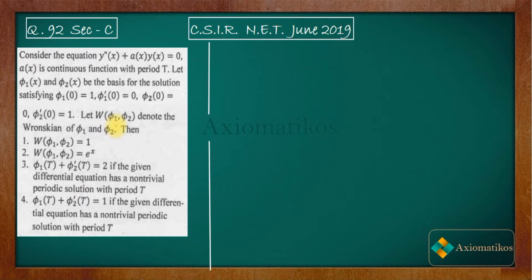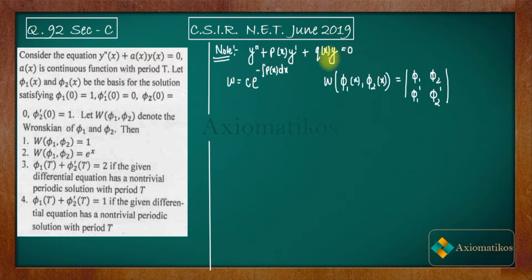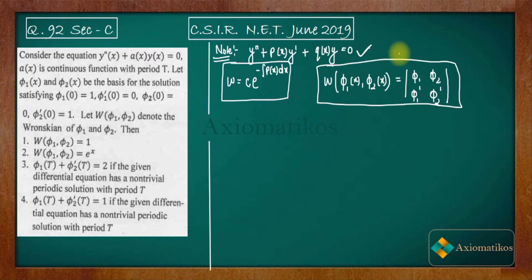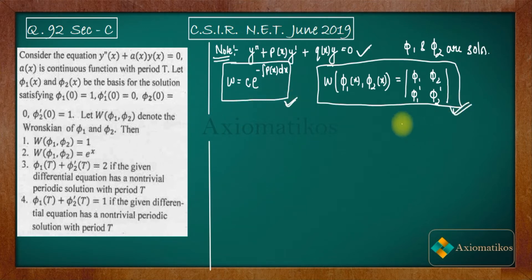Let us introduce the Wronskian. For a second-order homogeneous differential equation, the Wronskian has two forms. φ₁ and φ₂ are two solutions of the differential equation, and we have two formulas to find the Wronskian.